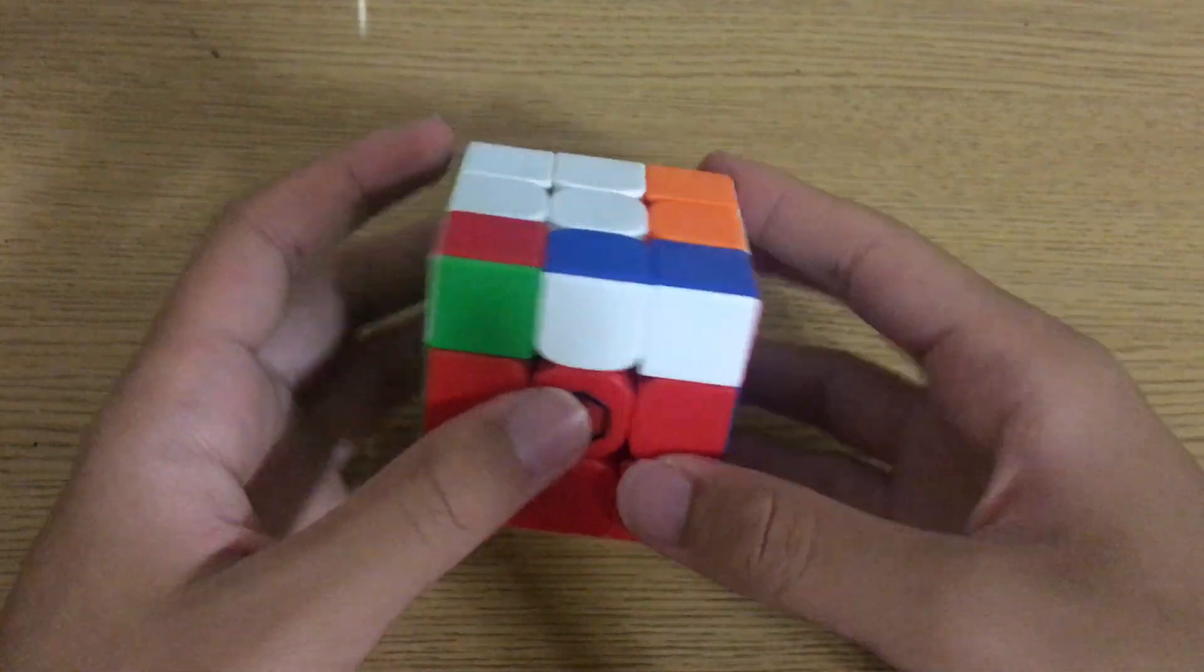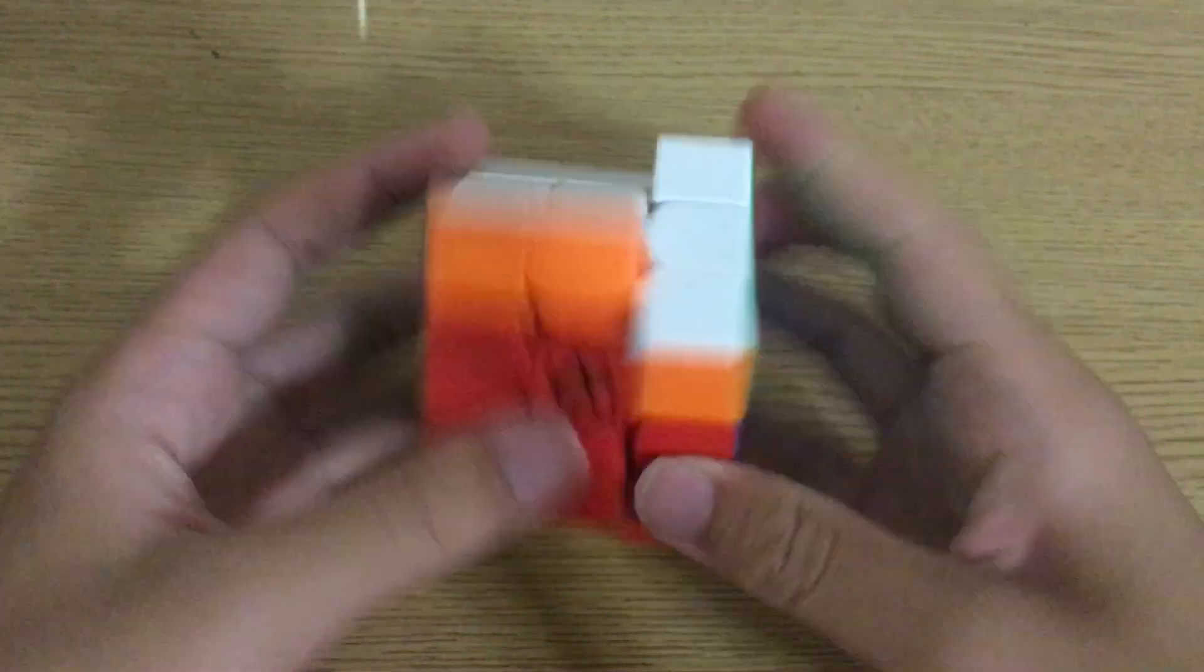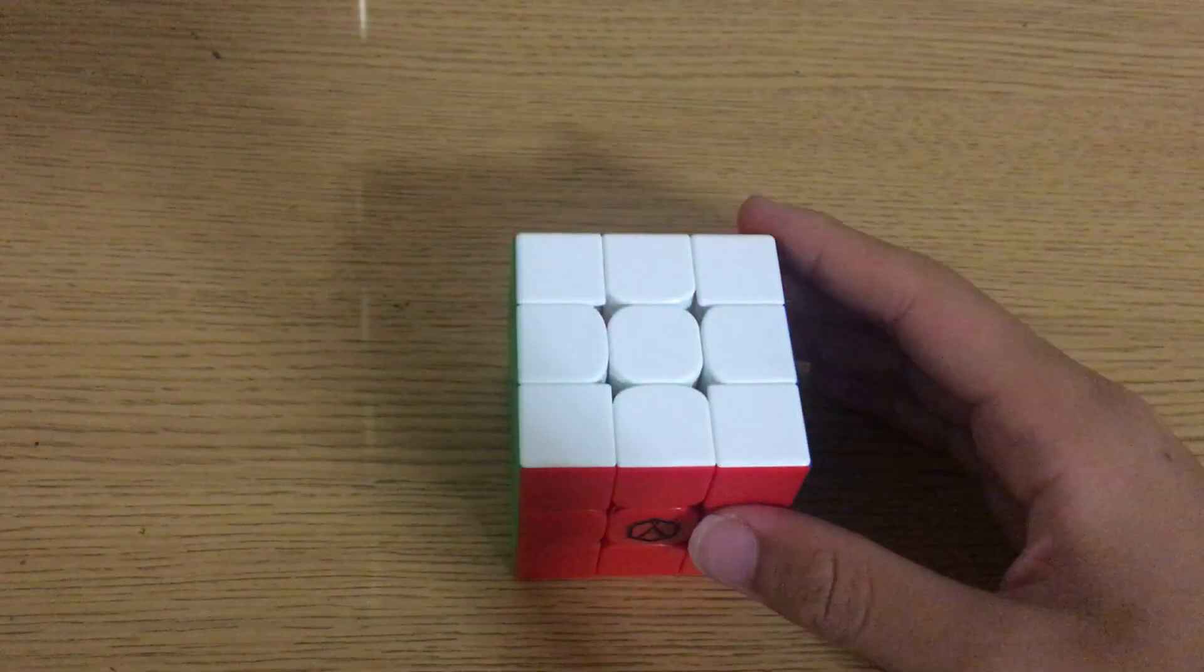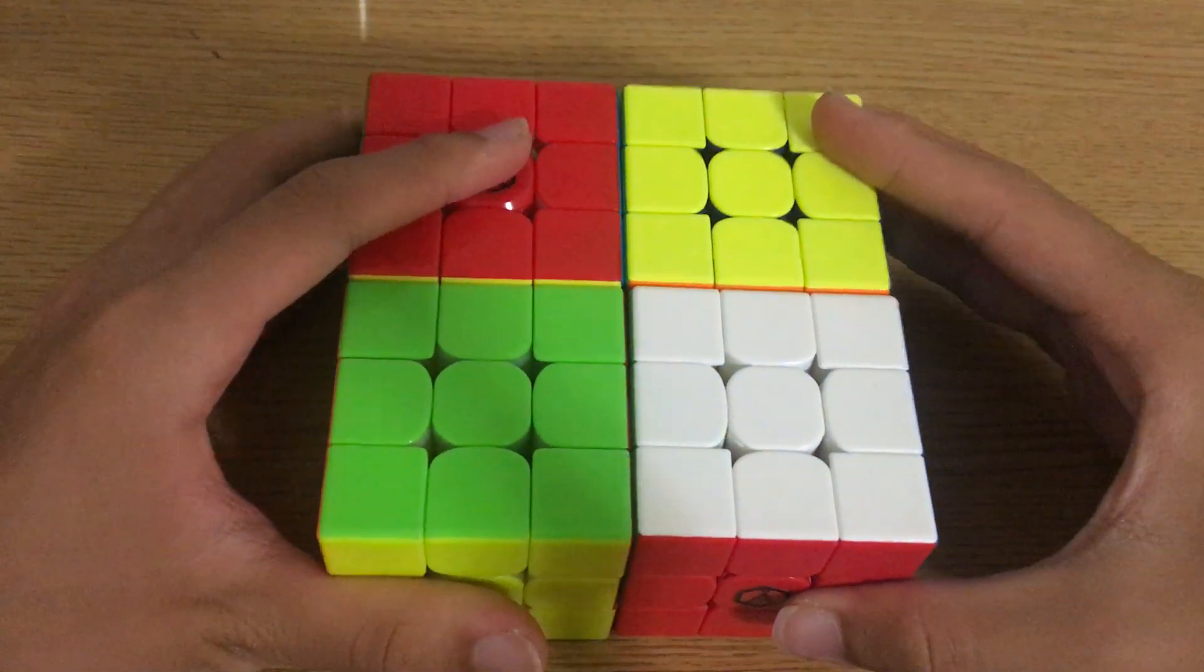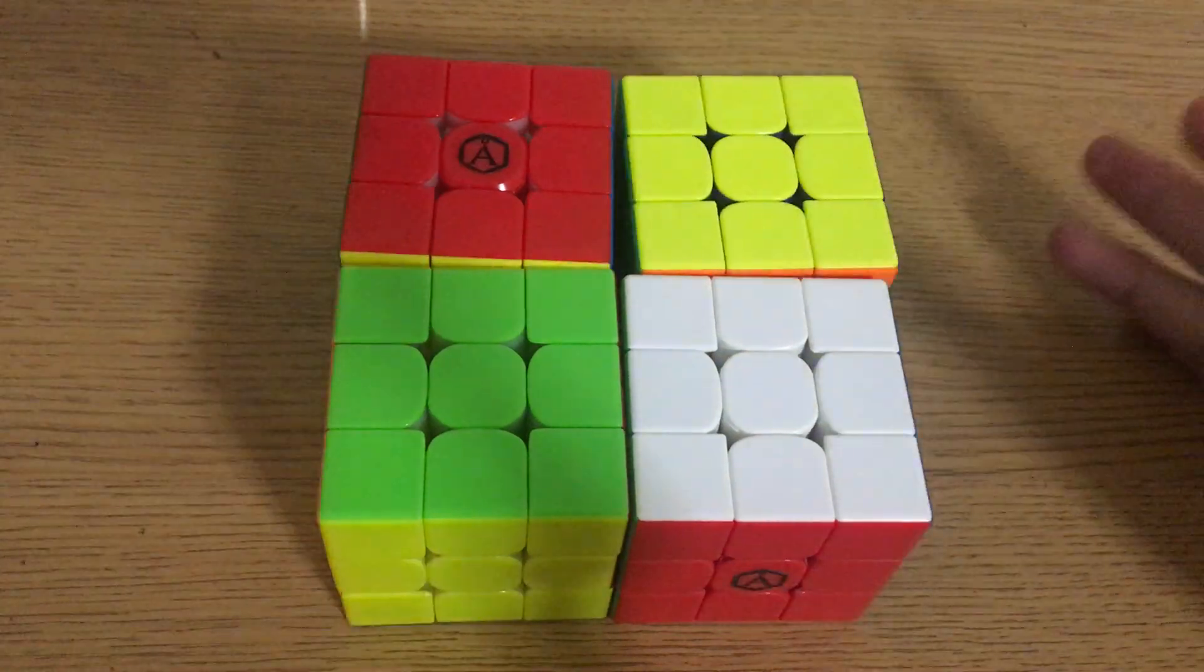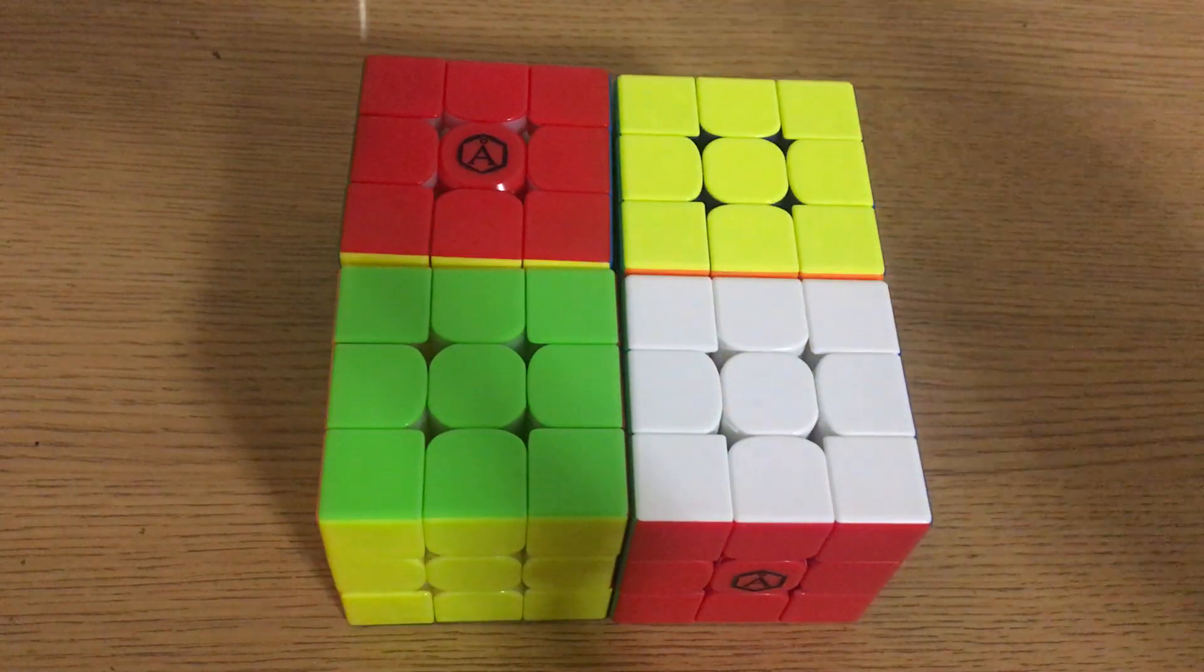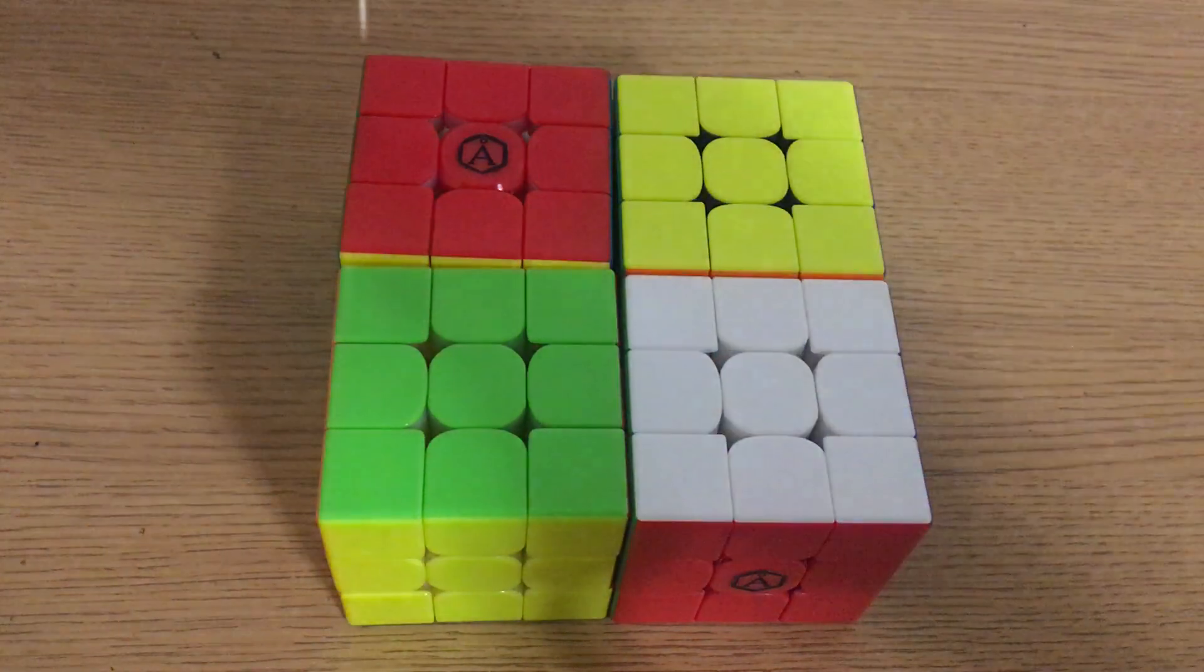And then finally, very luckily, an eight-move last layer. OLL, PLL skip to a U, AUF to make for an amazing 4.39 average. Thank you guys so much for watching. I hope you enjoyed. Like and subscribe as always, and I'll see you in the next one. Bye.